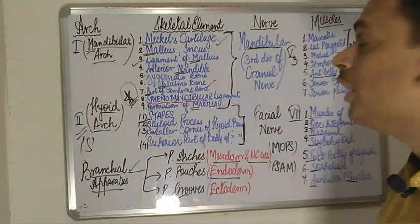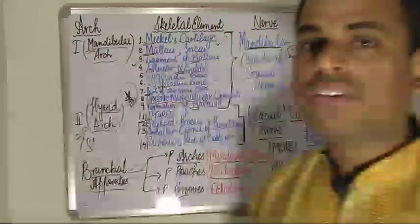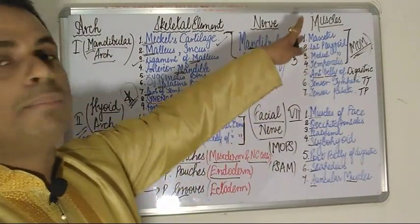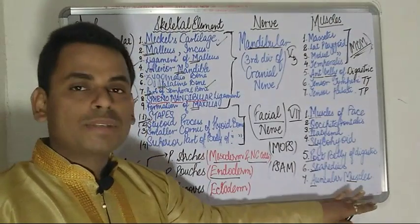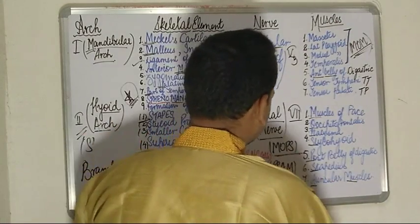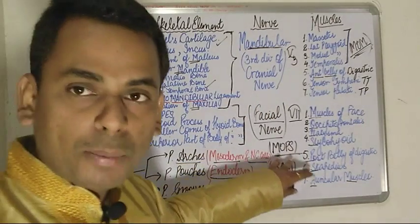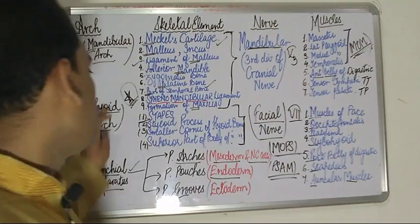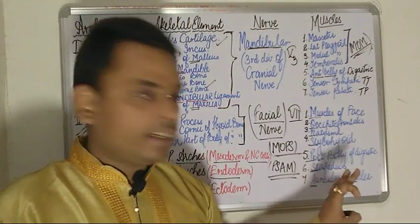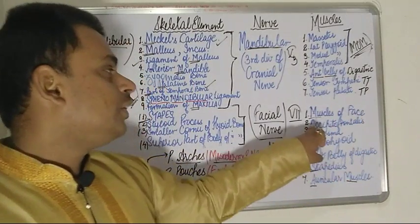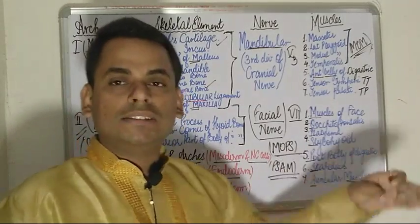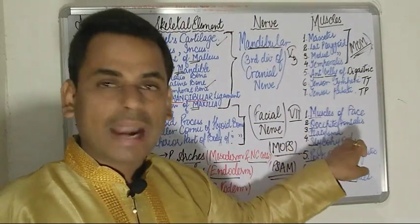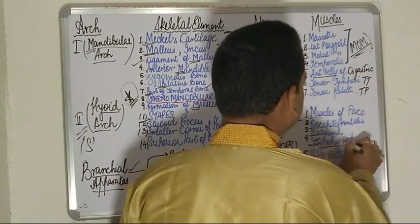The nerve of the second arch is the facial nerve, that is the seventh cranial nerve. The muscles of the second arch are simplified with the mnemonic 'MOPS': M for muscles of the face, O for occipitofrontalis muscle, P for platysma muscle, and S for stylohyoid muscle.